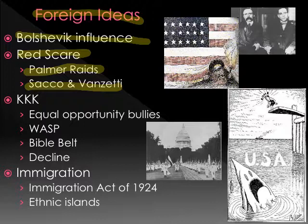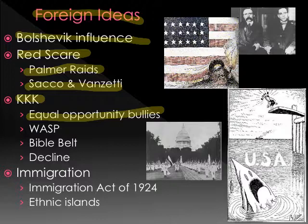Leading the charge against immigrants — not just Sacco and Vanzetti — was the KKK. The Klan made a return in the 1920s; we haven't talked about them since Reconstruction. But the Klan is back and bigger than ever, and the reason is because they became what I like to call equal opportunity bullies. They were no longer just anti-black. The last time we saw them after the Civil War they targeted blacks, but now they're going to branch out and target other groups too.